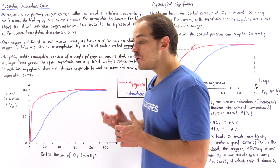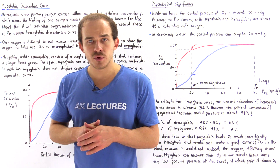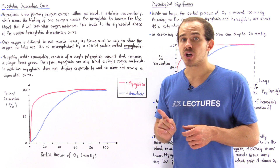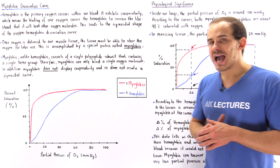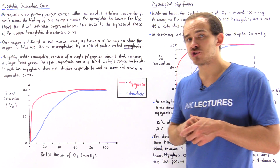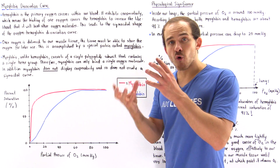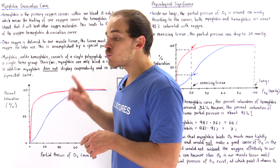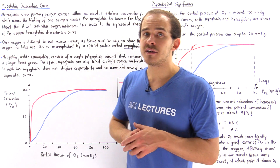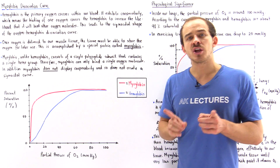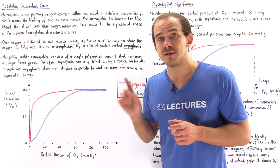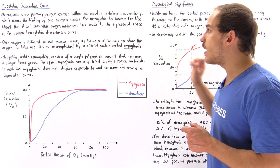Likewise, if we have a fully saturated oxyhemoglobin molecule and one of the heme groups releases an oxygen molecule, then that will create a conformational change in the structure of the 4 polypeptides, and that will make it more likely for the other 3 occupied heme groups to actually release an oxygen molecule. This is what we mean by cooperativity.